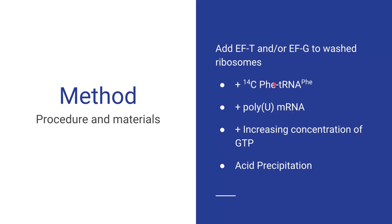For the second experiment, Ravel utilized washed ribosomes and the addition of the following: 14C labeled phenylalanine-tRNA, poly-U mRNA, EF-T, and increasing concentrations of GTP. The test condition was the presence of EF-G.